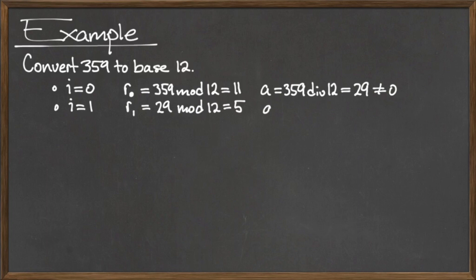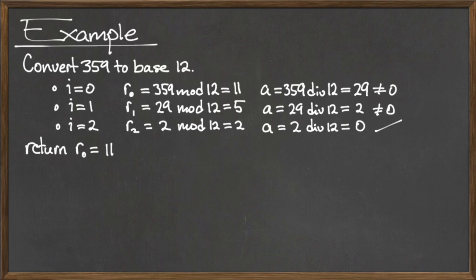This loop must be repeated 2 additional times before the stopping condition a equals 0 is satisfied. The other two digits in our base 12 number are r sub 1, which is 5, and r sub 2, which is equal to 2.